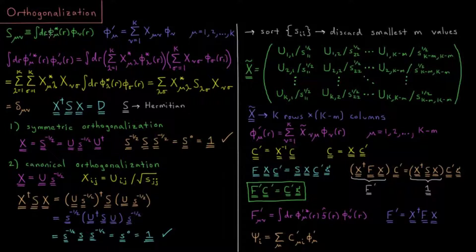This video is going to answer the question: how do we go about ensuring that we end up with an orthonormal basis set such that our overlap matrix is an identity matrix? The secret to doing that is going to, unsurprisingly, involve matrix transformations.